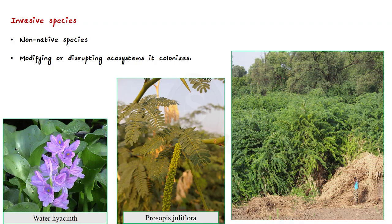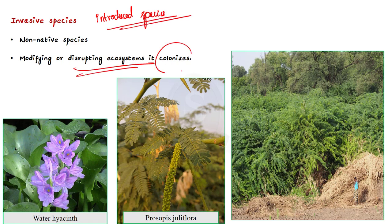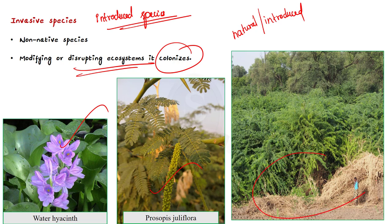What are invasive species? Invasive species, which is also called introduced species, is any non-native species that significantly modifies or disrupts the ecosystem it colonizes. Such species may arrive in new areas through natural migration, but they are often introduced by the activities of other species. Water hyacinth is a very good example of a water invasive species. The one mentioned in the news article, the Prosopis juliflora, is a shrub or small tree identified as an invasive species in India because it absorbs all the nutrients and damages the growth of other organisms around it.